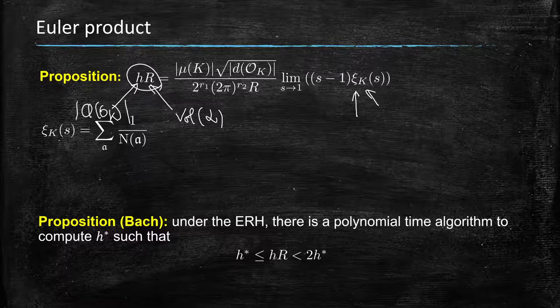Now, under the generalization of Riemann hypothesis, we know how to compute efficiently a coarse approximation. Now, this coarse approximation gives us the product h times r up to a factor of two.